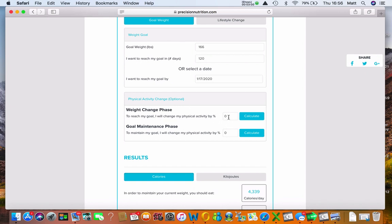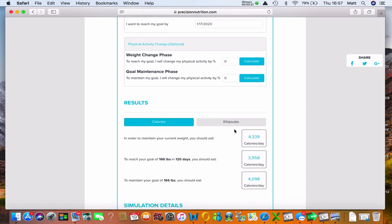So if I knew that I was currently doing three hours of exercise a week and I thought, actually, I'm going to do four, then that would be a 25% increase in my physical activity level. During my maintenance phase, once I get there, I'm going to change my physical activity level - I'm going to do 25% less. So it gives you an idea of what you need to consume when you're not doing as much exercise as well.